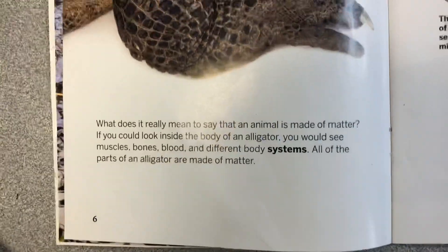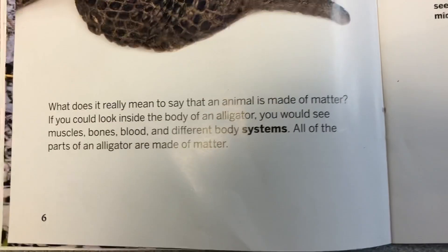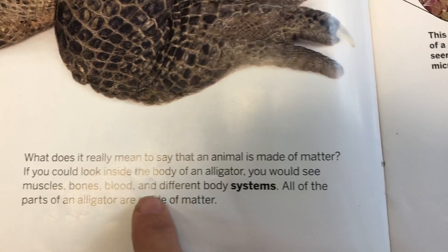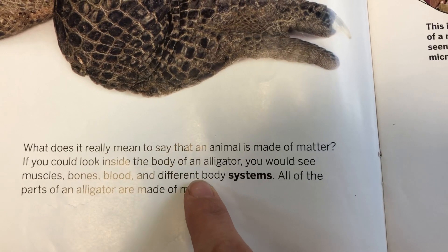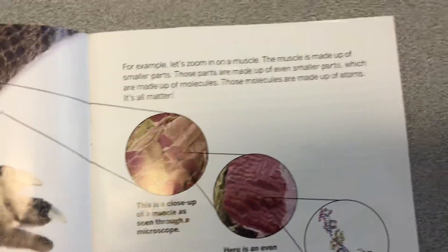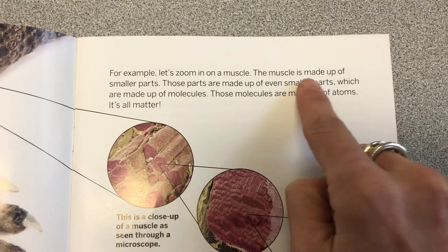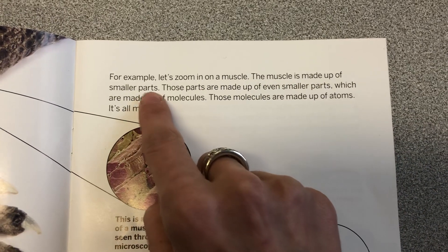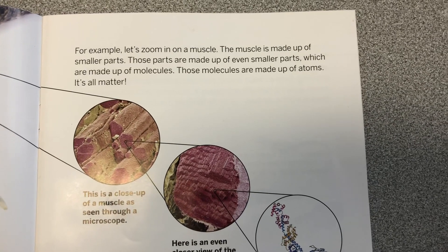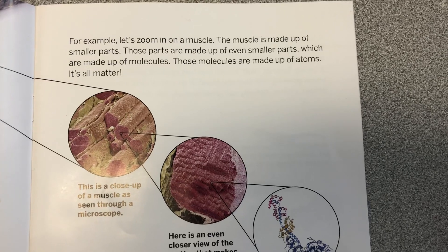What does it really mean to say that an animal is made of matter? If you could look inside the body of an alligator, you would see muscles, bones, blood, and different body systems. All of the parts of an alligator are made of matter. For example, let's zoom in on a muscle. The muscle is made up of smaller parts. Those parts are made up of even smaller parts, which are made of molecules. Those molecules are made up of atoms. It's all matter.